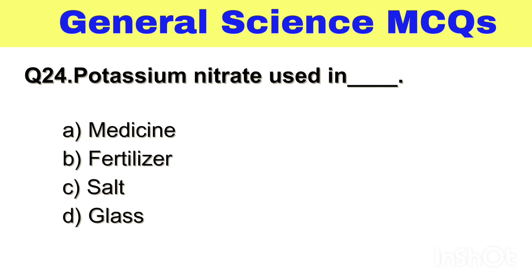Question No. 24. Potassium Nitrate is used in — Option A. Medicine, B. Fertilizers, C. Salt, D. Glass. The right answer, Option B. Fertilizer.